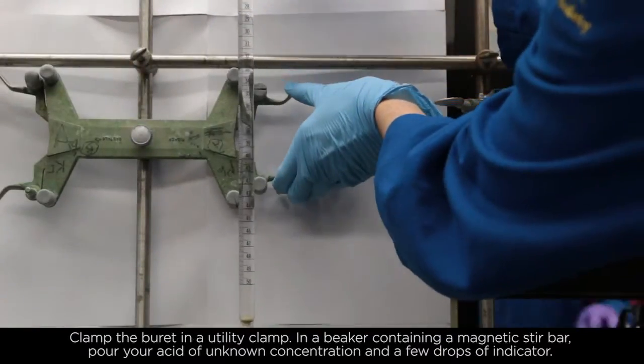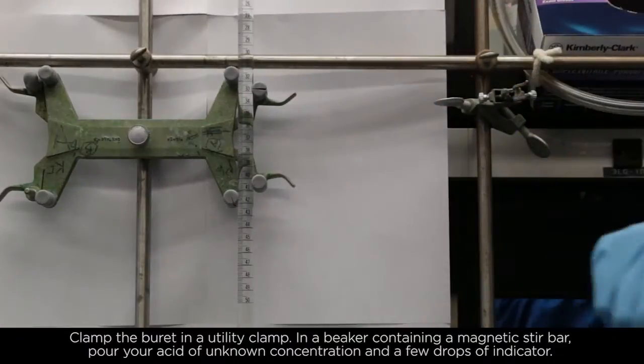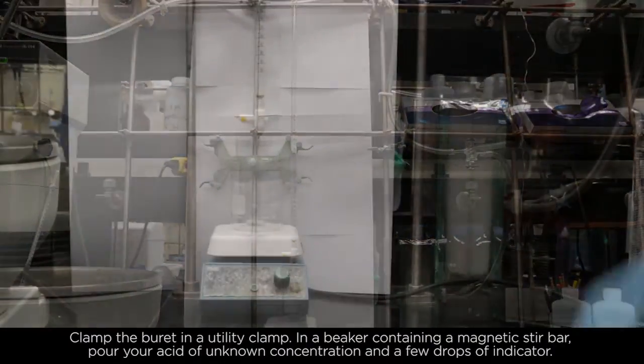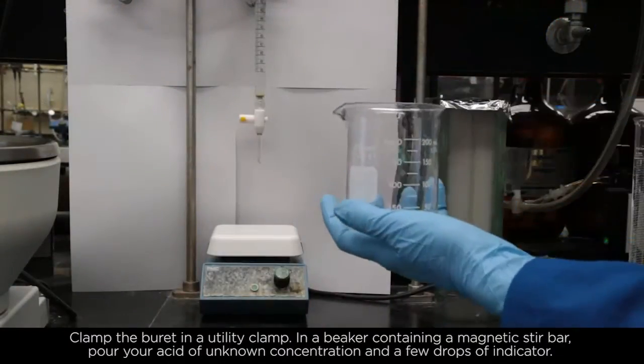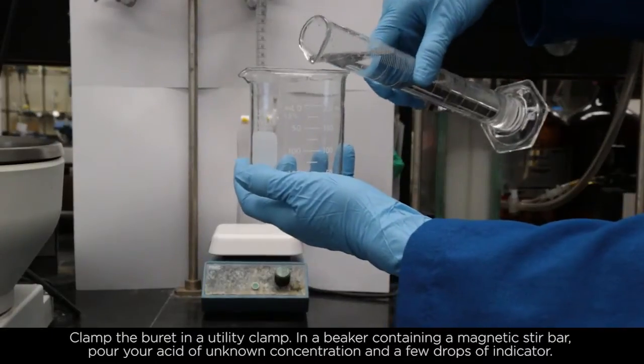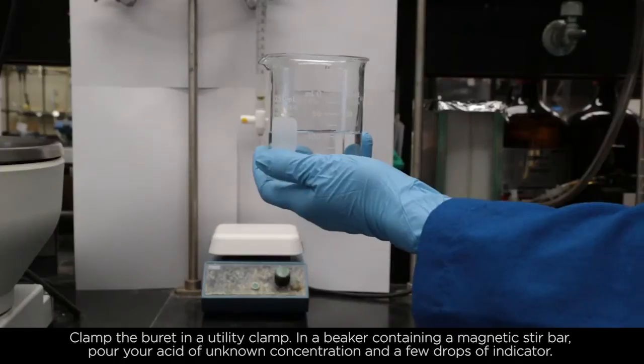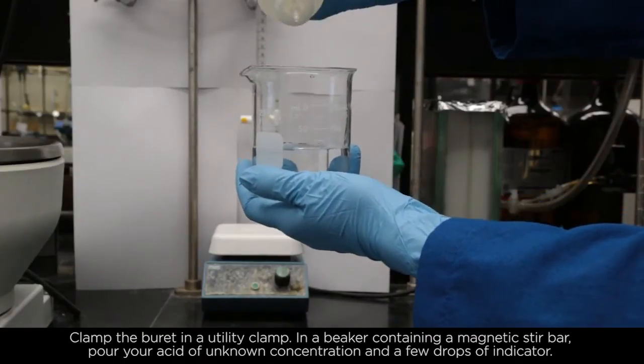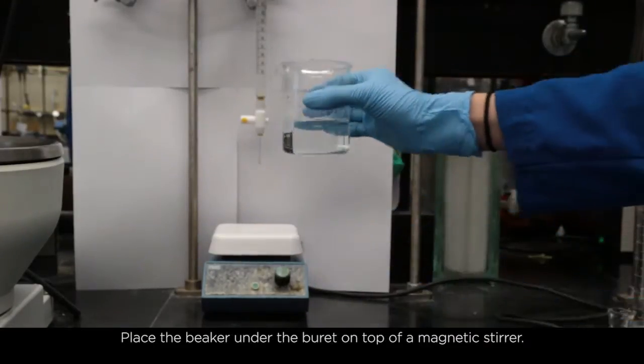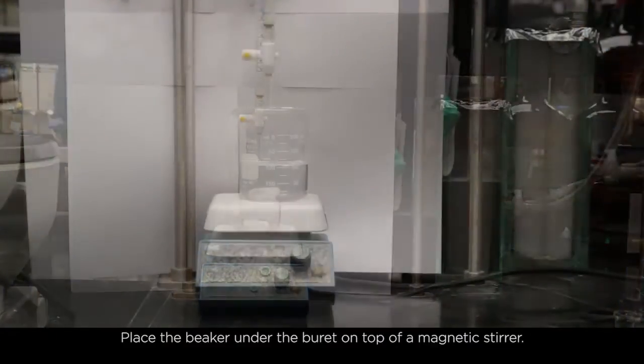Clamp the burette in a utility clamp. In a beaker containing a magnetic stir bar, pour your acid of unknown concentration and a few drops of indicator. Place the beaker under the burette on top of a magnetic stirrer.